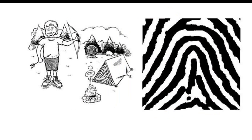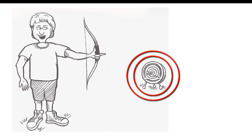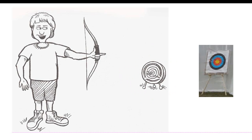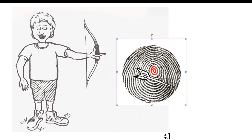Now I'm going to get into the fourth pattern that you'll have to learn, and that is the whirl. I have a young man here with a bow and arrow, and that is a target in the background. The analogy I'm going to use is a bullseye — a bullseye target as the analogy for the whirl. This is going to be the introduction to the whirl. What I like to describe is the whirl pattern and its very consistent concentric circle formations, and it looks somewhat like a bullseye.